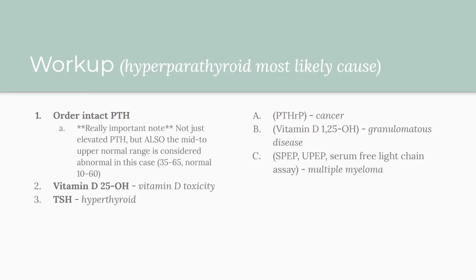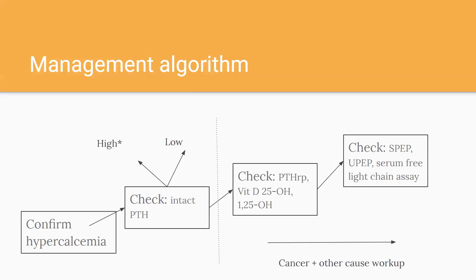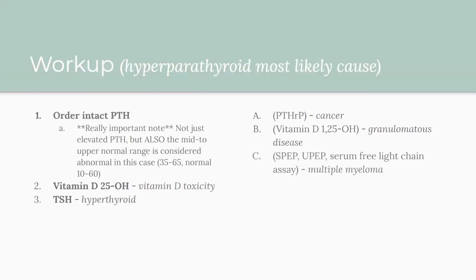My real-world reasoning for batching these labs together: I work in a federally qualified health center and I don't want to lose her to follow-up. Having a patient come back multiple times for staged lab draws is burdensome. Patient-centered, holistic care means making sure she's not stuck getting stuck three different times. I did not order PTHrP, 1,25-OH vitamin D, or SPEP/free light chain assay at that time — I wasn't comfortable with those in my first year. Now, more established, I might batch those into two draws based on likelihood.